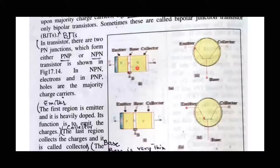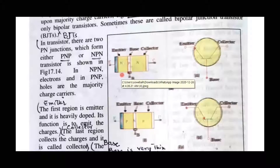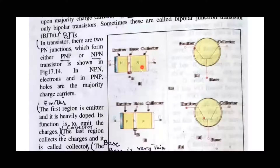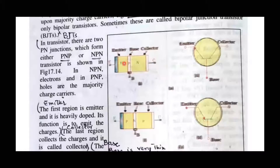The collector is not as heavily doped as the emitter, nor as lightly doped as the base. You join these three differently doped pieces together. This is the basic construction procedure: you join an emitter, a base, and a collector.